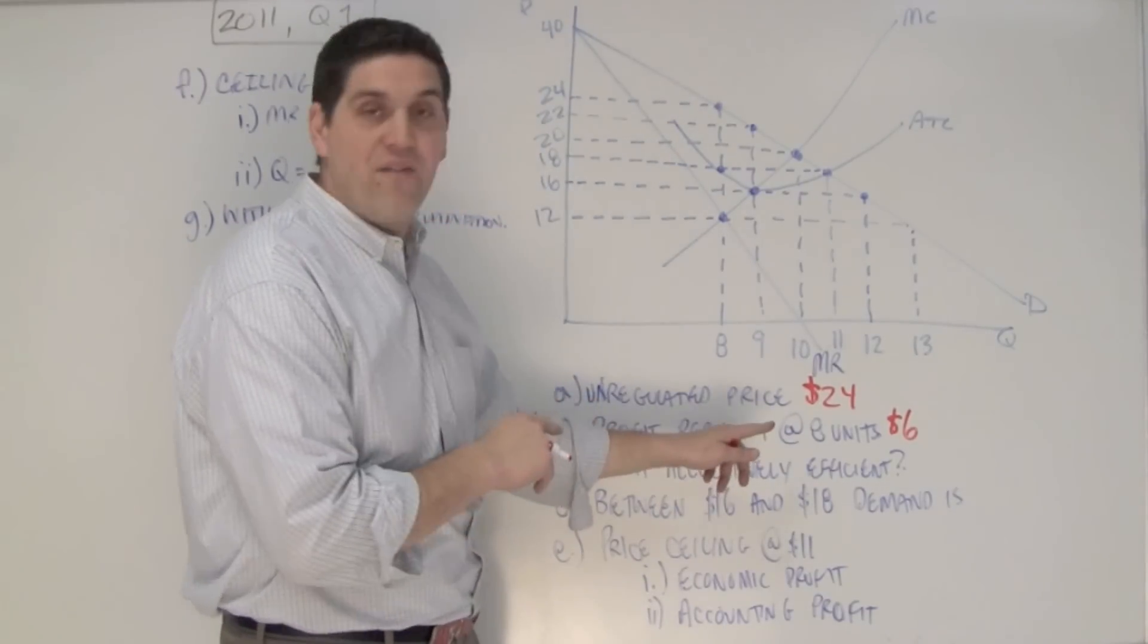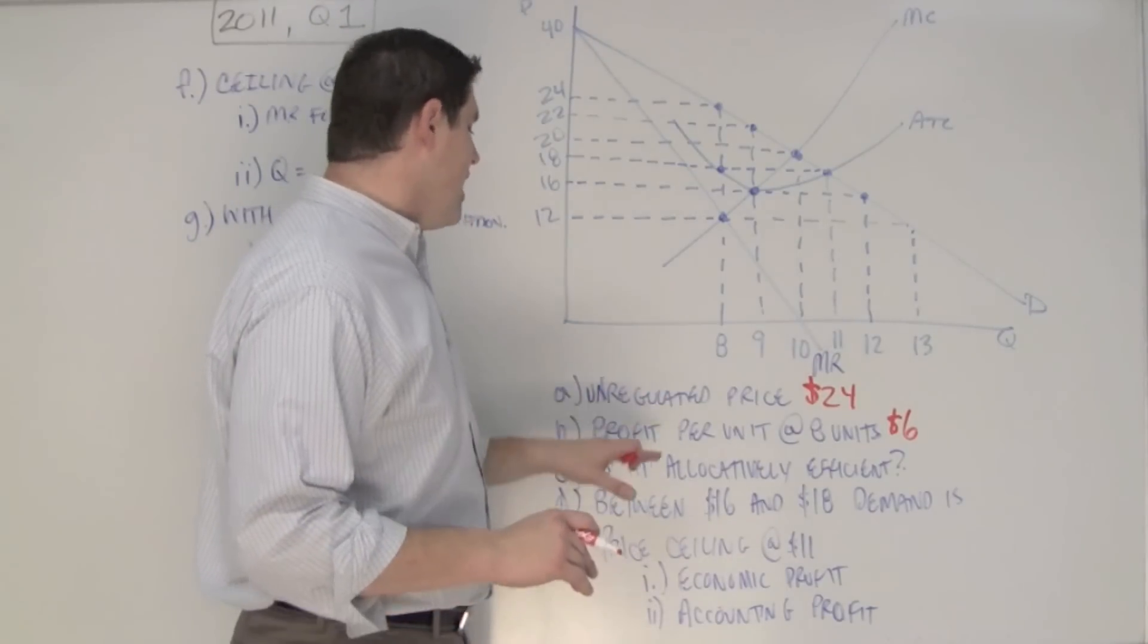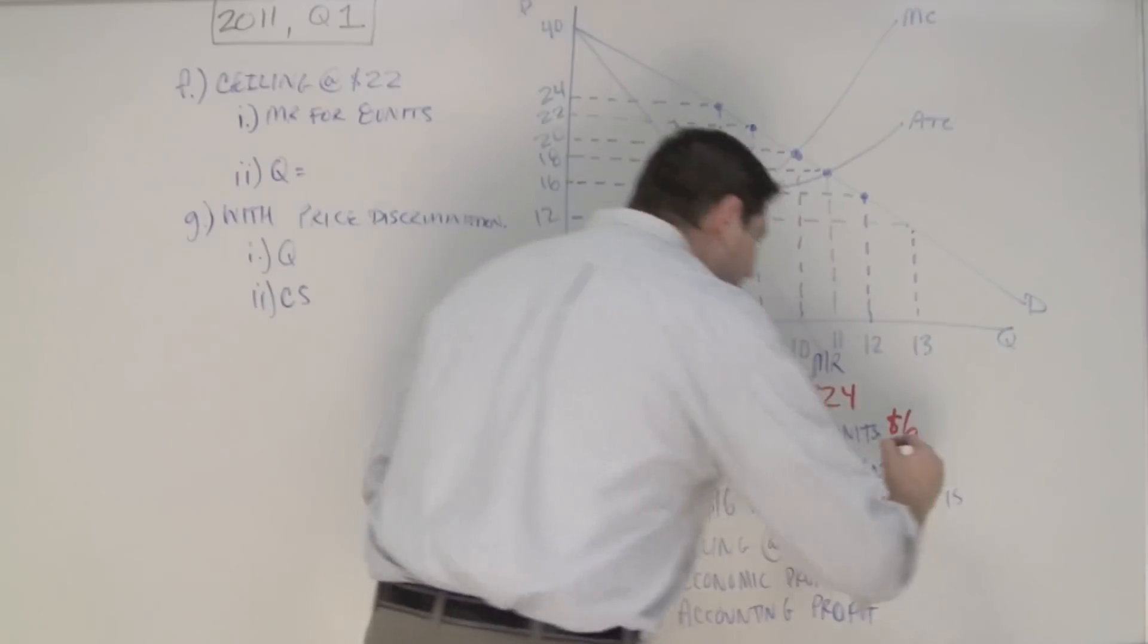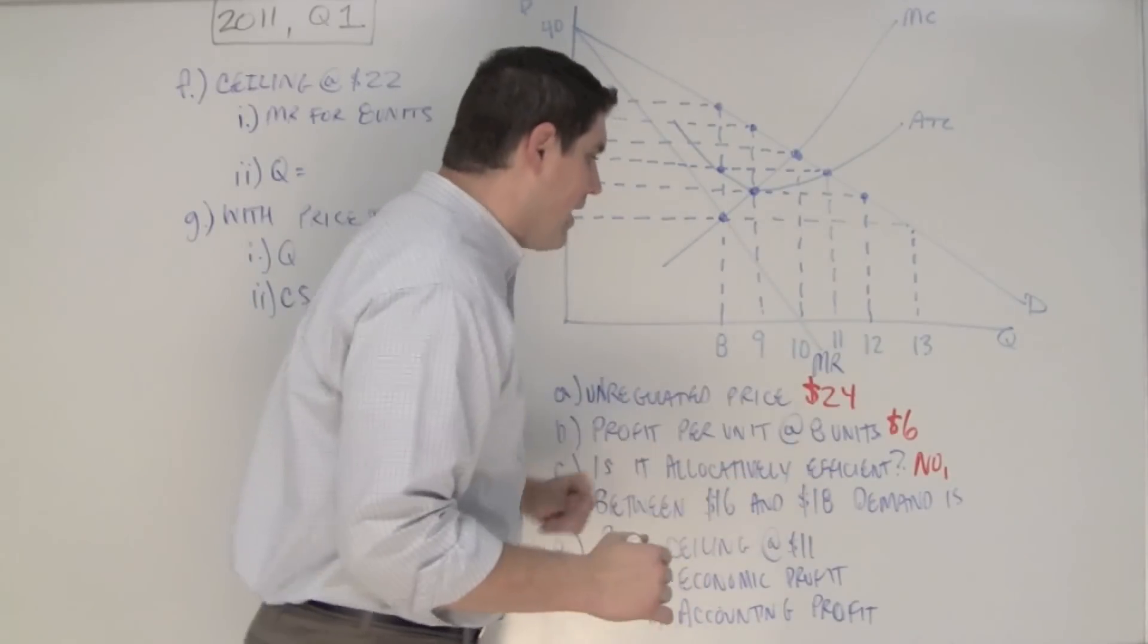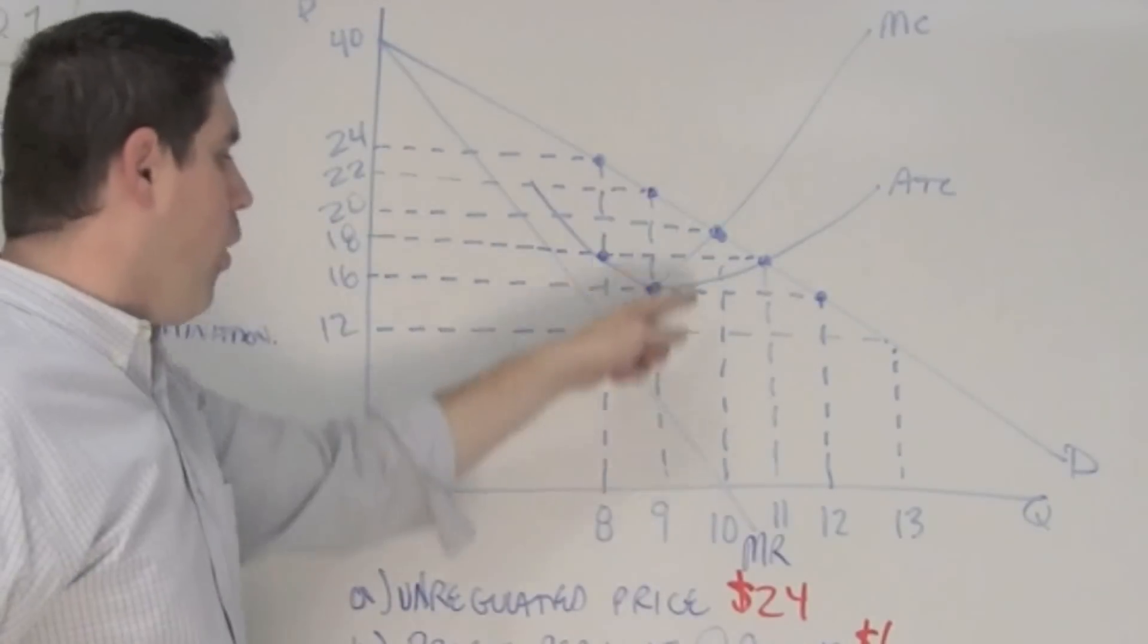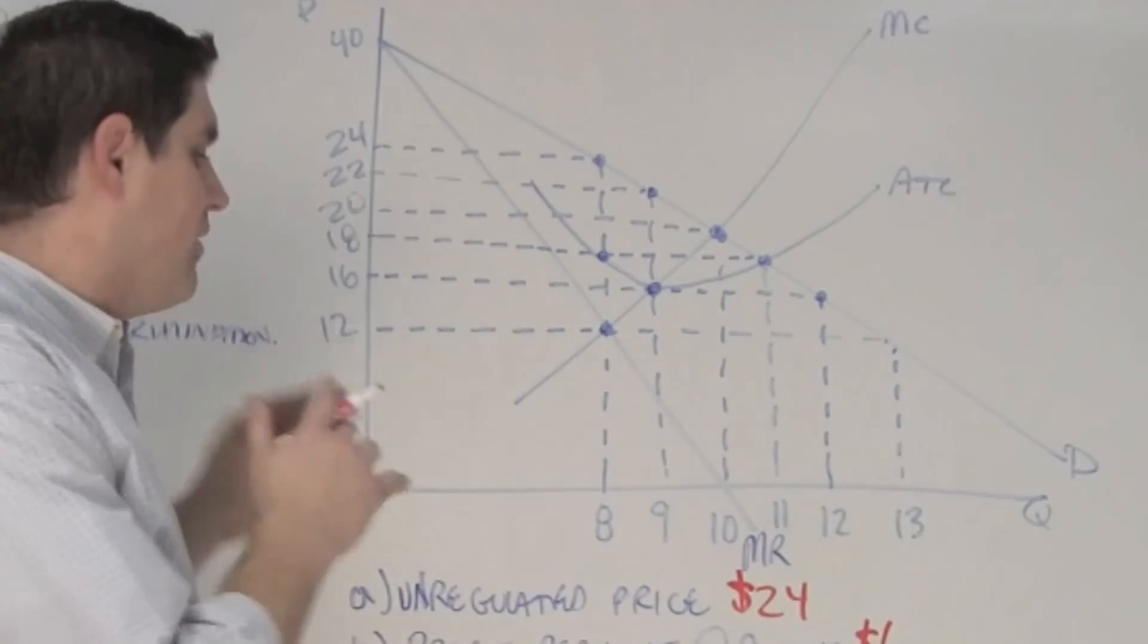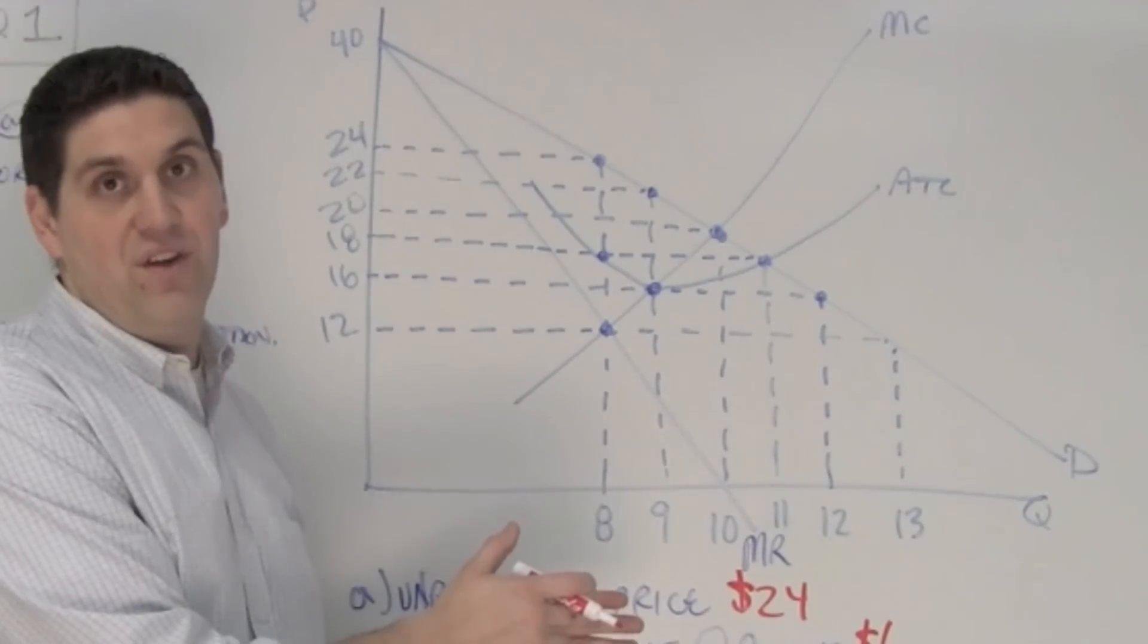Next question is, at the profit maximizing quantity of 8, is the monopoly allocatively efficient? The answer is no. But since it's an explain question, you have to explain no and why not. The reason why it's not allocatively efficient is because the demand does not equal the marginal cost. If they were producing the quantity right here at 10, where the marginal cost at demand, then they would be allocatively efficient. But since they're not, there's some deadweight loss, and they're not allocatively efficient.